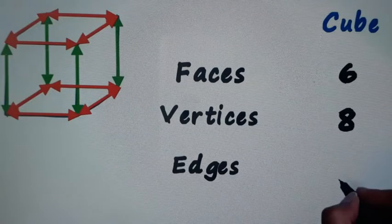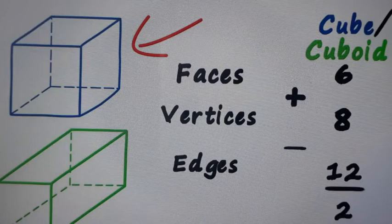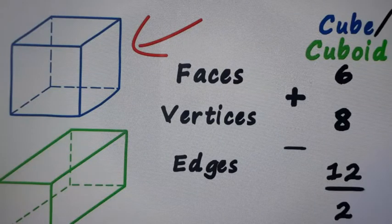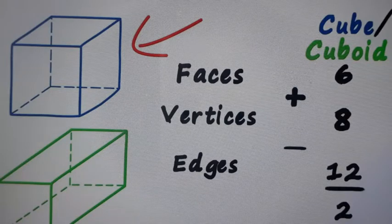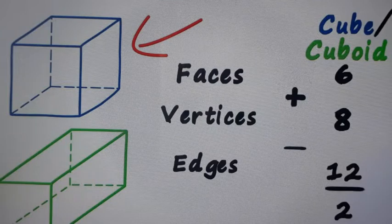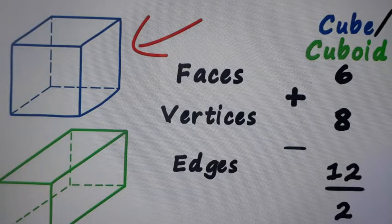So total edges are 12 in case of a cube. If we add faces plus vertices, it will become 14. And we have 12 edges also, so we can subtract 12 from this 14 and we got 2. This is the relationship.